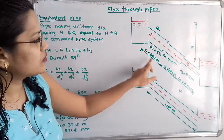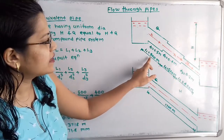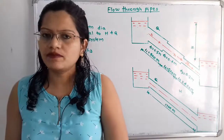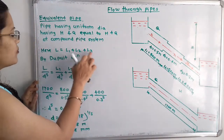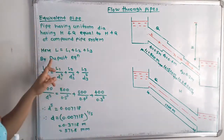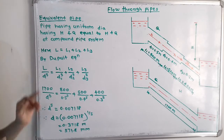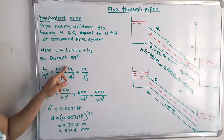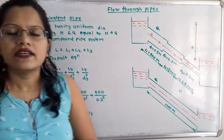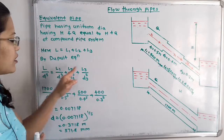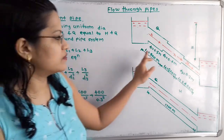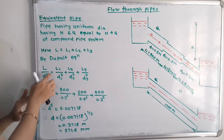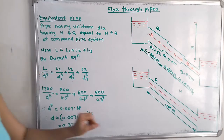The total length l1 + l2 + l3 = 800 + 500 + 400 = 1700 m, which equals the length of the equivalent pipe. So we can say L = l1 + l2 + l3. We apply the Dupuit equation: L/D^5 = l1/d1^5 + l2/d2^5 + l3/d3^5. We know l1, l2, l3 as well as d1, d2, and d3, and we also know L, so the only remaining unknown is D^5, from which we can find the diameter of the equivalent pipe.